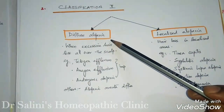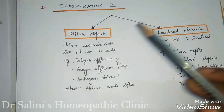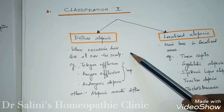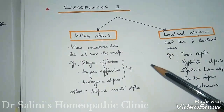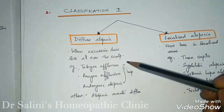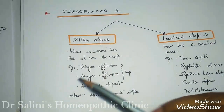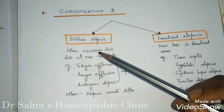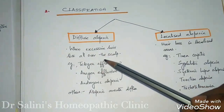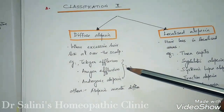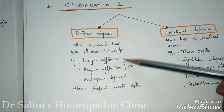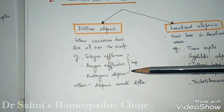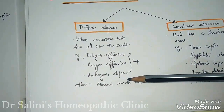Diffuse alopecia is when excessive hair loss occurs all over the scalp — not localized. When there is excessive hair loss all over the scalp, the three most important factors are telogen effluvium, anagen effluvium, and androgenic alopecia.